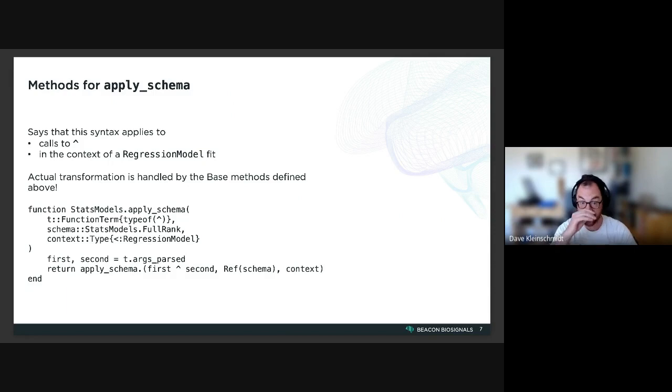And so the method definition below, where the first argument is a FunctionTerm which is parameterized by the type of the function that is actually called, and the last argument, the context, is a type, and here we're just dispatching on subtypes of RegressionModel.